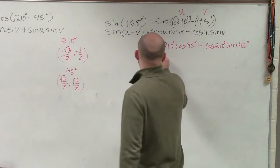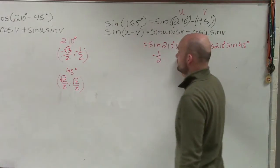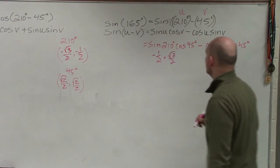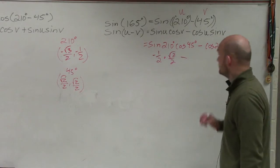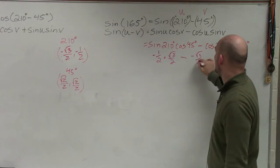the sine of 210 degrees is the y-coordinate, which is negative 1 half. The cosine of 45 degrees is the square root of 2 over 2. Again, we're multiplying those.